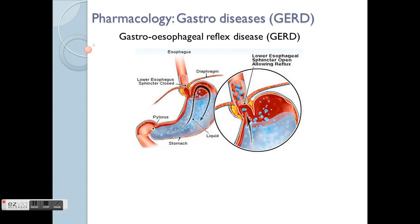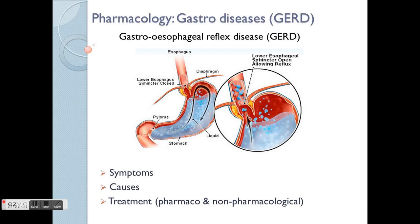Because it's too acidic, it eats through the surface of the tissue. In this section, we're supposed to know about the symptoms of GERD, the causes, and also the treatment, which includes both pharmacological and non-pharmacological treatment methods.